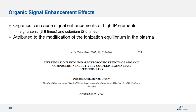Another approach for labs analyzing EPA Method 200.8 to achieve lower detection limits needed for arsenic and selenium is the addition of organics. In the presence of a small amount of organic, the ionization equilibrium within the plasma for these higher ionization potential elements can provide signal enhancement. Many labs add a small amount of methanol or isopropanol to their internal standard mix to help provide this improvement to their signal. The paper shown here discusses the causes and extent of those signal enhancement effects.